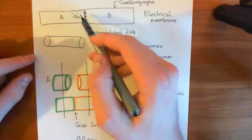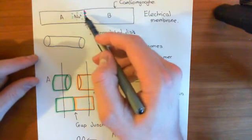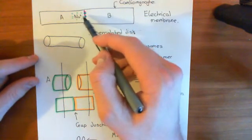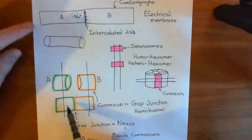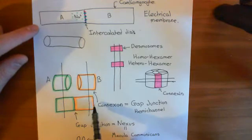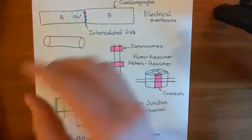Now what can happen is these sodium ions can spread through the gap junctions. They can move through the connexon on cardiomyocyte A, through the connexon on cardiomyocyte B, into cardiomyocyte B.